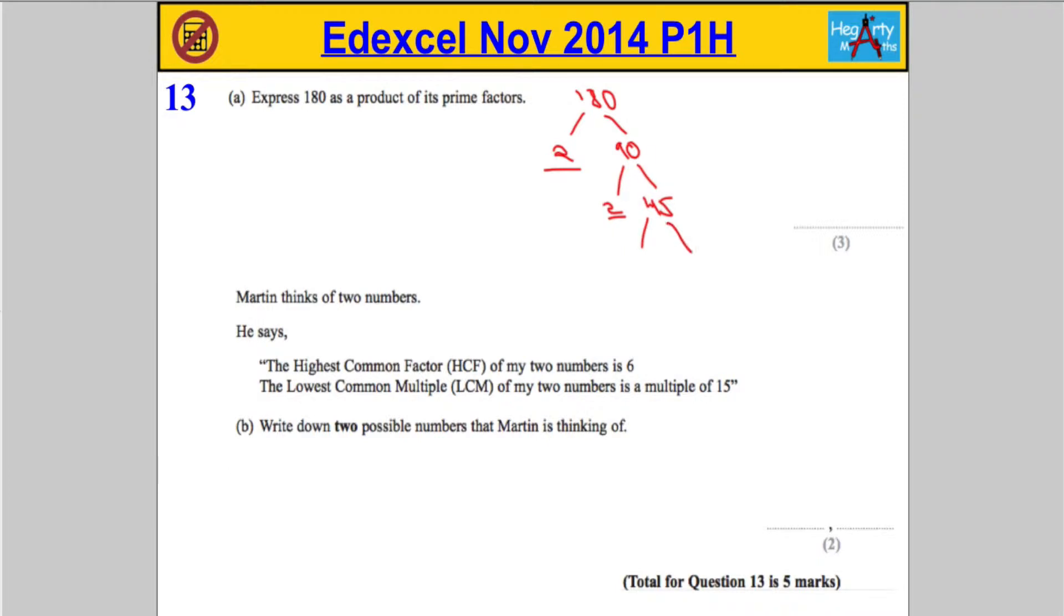Let's keep going. 45 can be written as 5 times 9. 5 is a prime number, 9 is not, so we're going to keep going. And 9 can be written as 3 times 3.